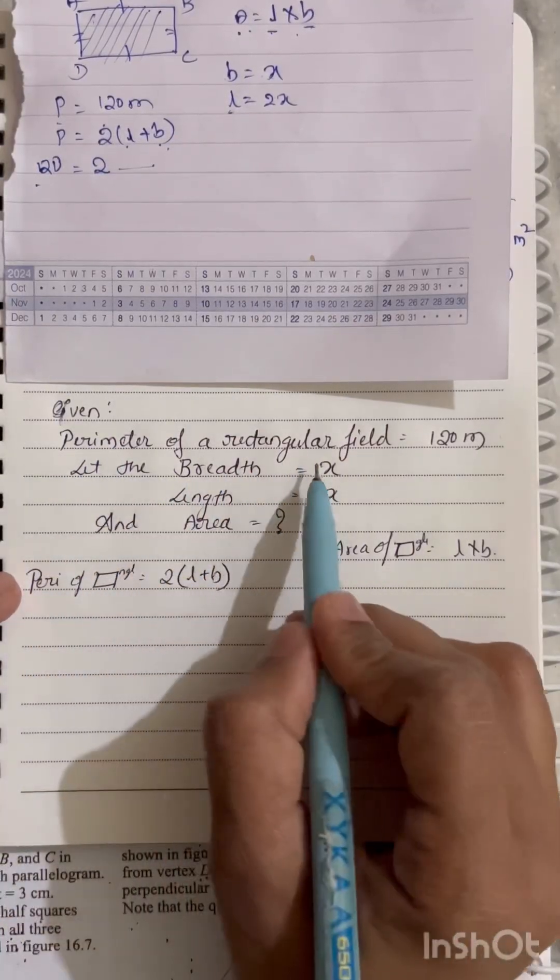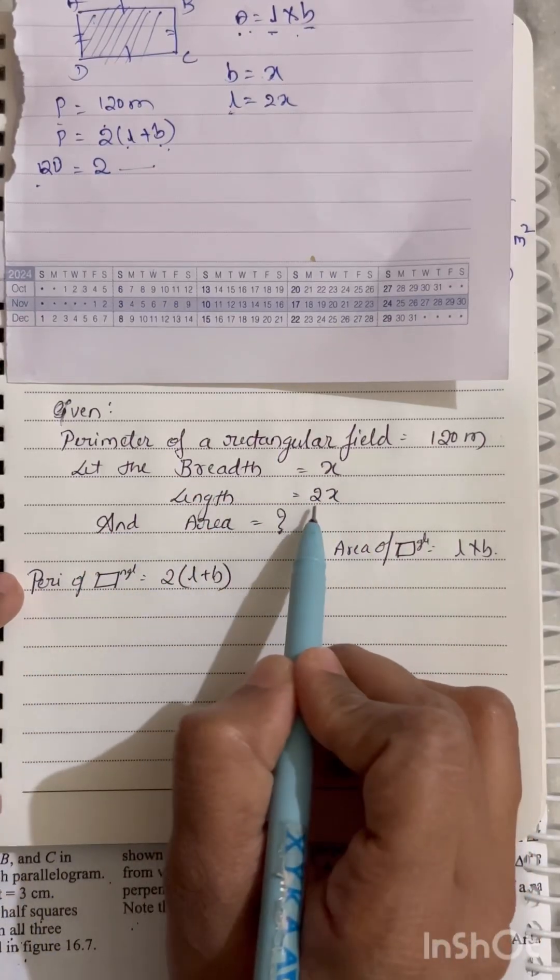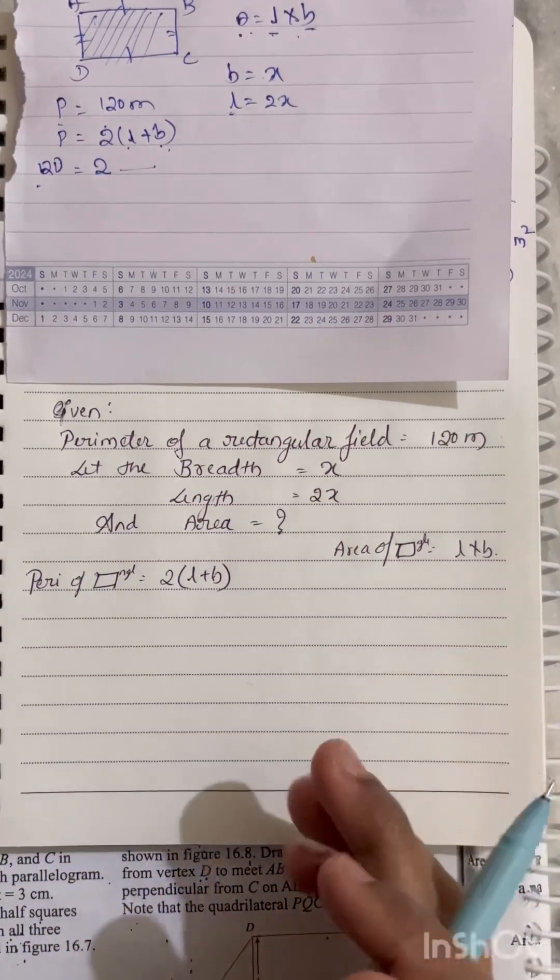So given: I have written perimeter of the rectangle field which is 120 meters. Let the breadth be X, length will be 2X, and we have to find the area equals question mark.